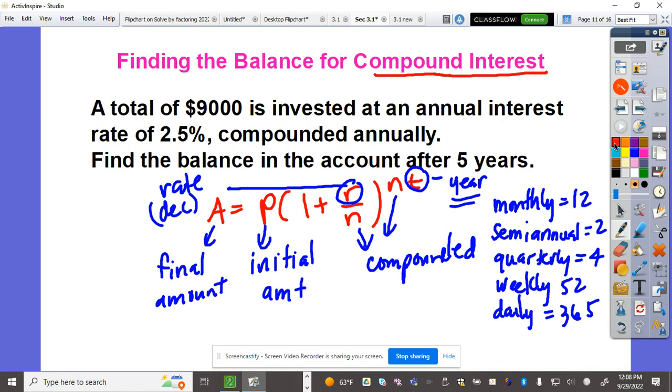Here's a problem: A total of $9,000 is invested at an annual interest rate of 2.5% compounded annually. That means N = 1. $9,000 is P, 2.5% is the rate, so that's 0.025. Move the decimal point twice to get 0.025. Find the balance after 5 years, so T = 5.